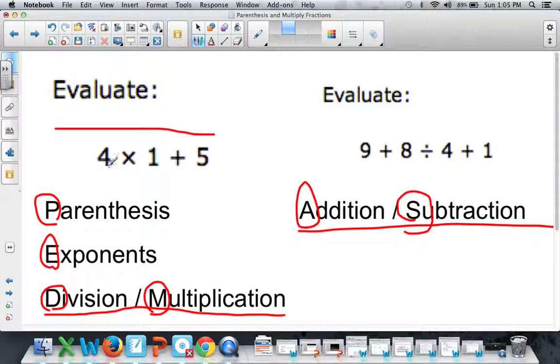So, here in this first one, we have 4 times 1 plus 5. Well, multiplication, right there, comes before addition, which is right there. So, we would do multiplication first. 4 times 1. That equals 4. Now, you're just left with the plus 5 that we didn't touch yet. 4 plus 5 equals 9. Simple as pi. We're all done.